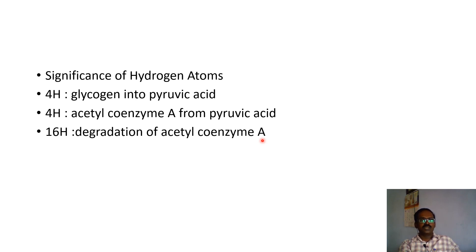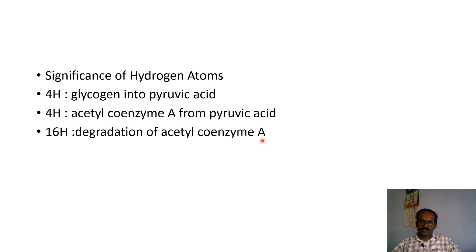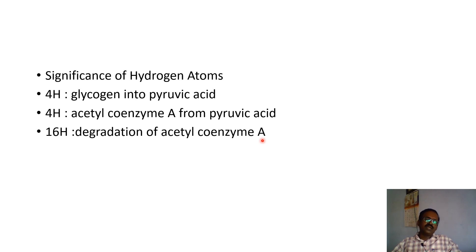Total 24 hydrogen atoms are produced. Out of 24, 20 hydrogen atoms are combined with nicotinamide adenine dinucleotide, which is a hydrogen carrier, and those 20 hydrogen atoms are converted to ATP molecules — 20 hydrogen atoms produce 30 ATP molecules. The remaining 4 hydrogen atoms are converted to 4 ATP molecules. So a total of 34 ATP molecules are produced from the 24 hydrogen atoms.